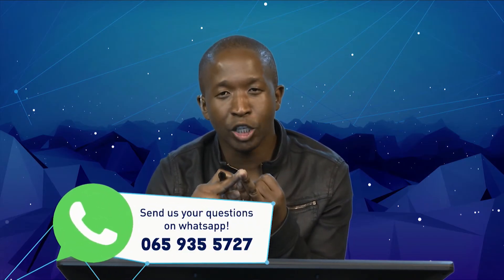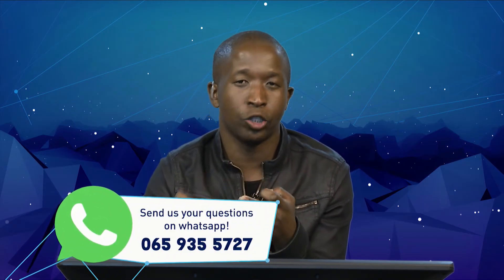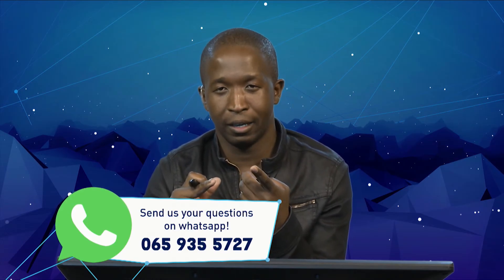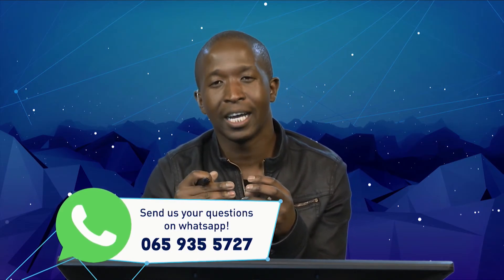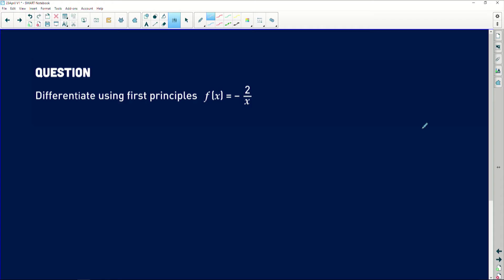We're now going to go to our last question of the show, which is a very interesting question. In fact, if it was by me, I would say this is the hardest of all the first principle questions you can ever get. We ask you to differentiate a constant, a linear function, a quadratic function, we also ask you to do a cubic, but the one we're going to use now is a question that involves a fraction where x is a denominator. Let's go and see what actually the question looks like. It says to us differentiate using first principles: f(x) equals negative 2 over x.